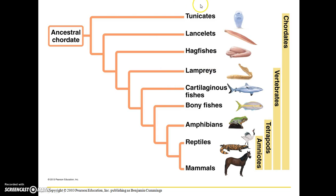This is a simple phylogeny showing the ancestral chordate in relation to all of the modern chordates, vertebrates, tetrapods, and amniotes.